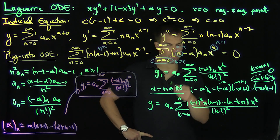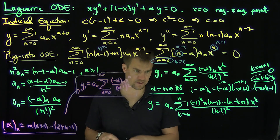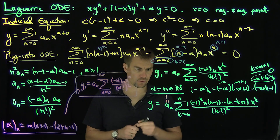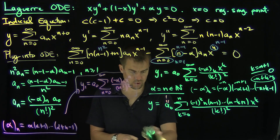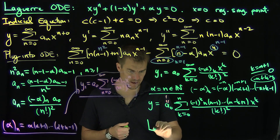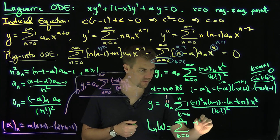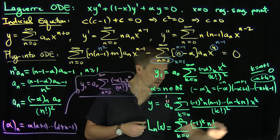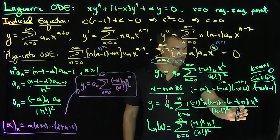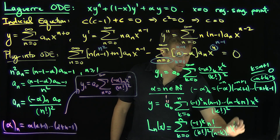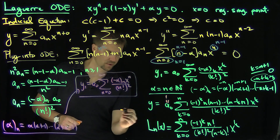We can write n times n minus 1 down to n minus k plus 1 as n factorial over n minus k factorial. Choosing a_0 equal to 1, we define L_n of x as the sum from k equals 0 to n of negative 1 to the k times n factorial over k factorial squared times n minus k factorial, times x to the k. This is a polynomial of degree n, and these polynomials are called the Laguerre polynomials.